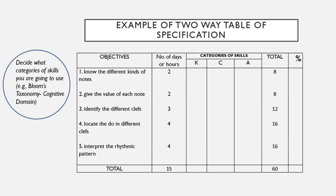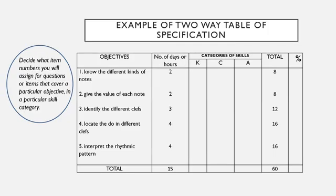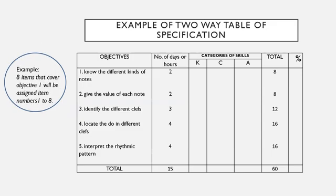Then we decide what categories of skills we are going to use. Let's say we will use Bloom's taxonomy of cognitive domain — particularly knowledge, comprehension, and application. This will differ depending on your subject and the skills you want to measure. We decide what item numbers to assign for questions that cover a particular objective in a particular skill category. Since there are 8 items for objective number one, we assign numbers 1 to 8. Please remember that the items need not be in sequence — just by looking at the table of specification, we can see which items cover which particular objective.